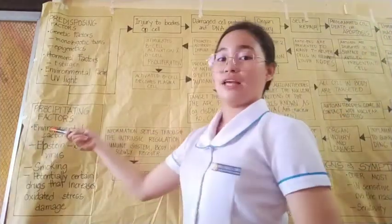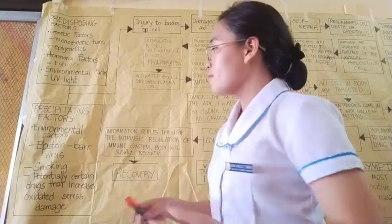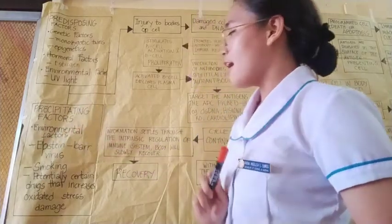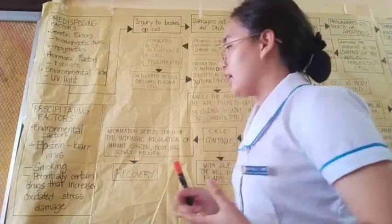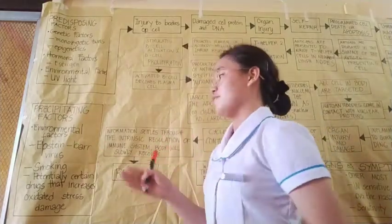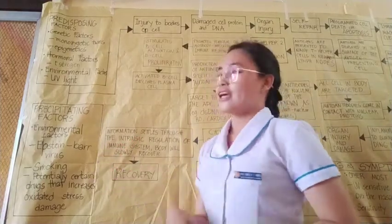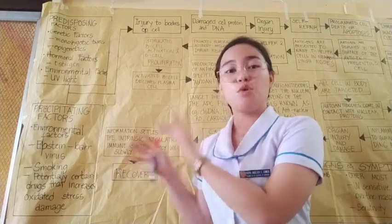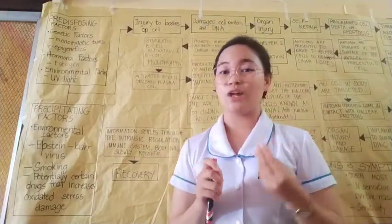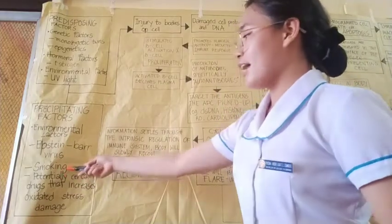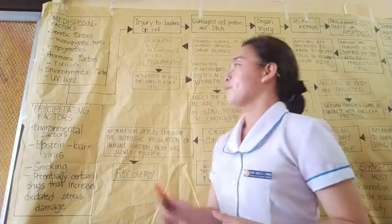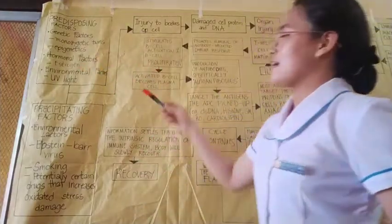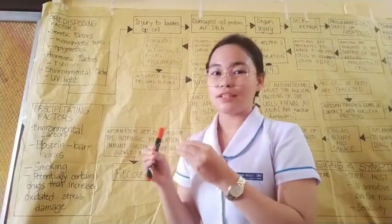The precipitating factors, also known as modifiable factors, include the Epstein-Barr virus. If a person has been infected with Epstein-Barr virus, this virus is said to influence the production of B cells, which are part of the mechanism of action. Other precipitating factors include smoking and certain drugs that increase oxidative stress damage. These predisposing and precipitating factors initiate the mechanism of action.